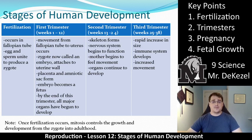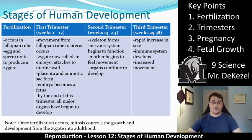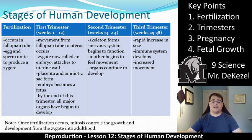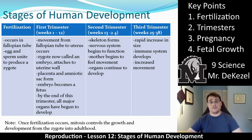In the first trimester — the first 12 weeks — movement from the fallopian tube to the uterus occurs. The zygote is now called an embryo, from about 8 to 12 weeks. It attaches to the uterine wall, burrowing in to get the nutrients it needs to grow. The placenta and amniotic sac form, the embryo becomes a fetus, and by the end of this trimester all the major organs have begun to develop — quite remarkable in just 12 weeks.